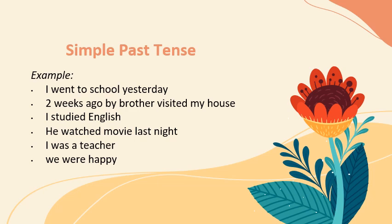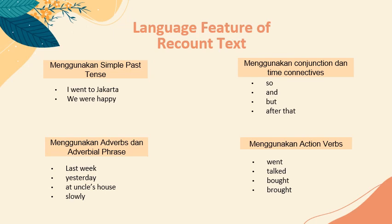Kita ke example of simple past tense. 'I went to school yesterday' — saya pergi ke sekolah kemarin. Karena kemarin, kita menggunakan 'went' untuk pergi, bukan 'go'. 'Two weeks ago, my brother visited my house' — 'visited' verb kedua. 'I studied English' — 'studied' verb kedua. 'He watched a movie last night' — 'watched' verb kedua. 'I was a teacher' — saya dulu seorang guru. 'We were happy' — kita bahagia. Ini tuh language feature yang tadi, dan kita akan analisis di dalam suatu recount text.